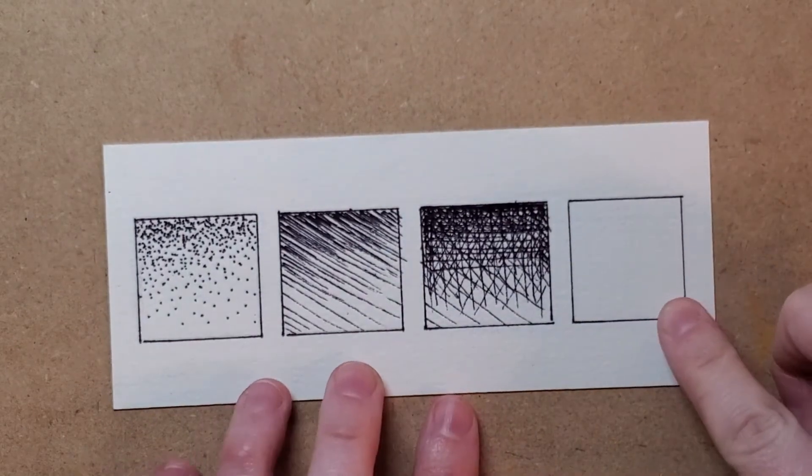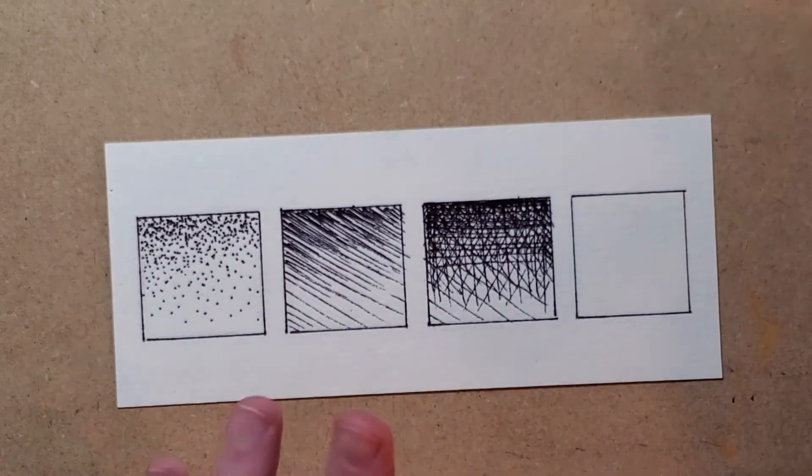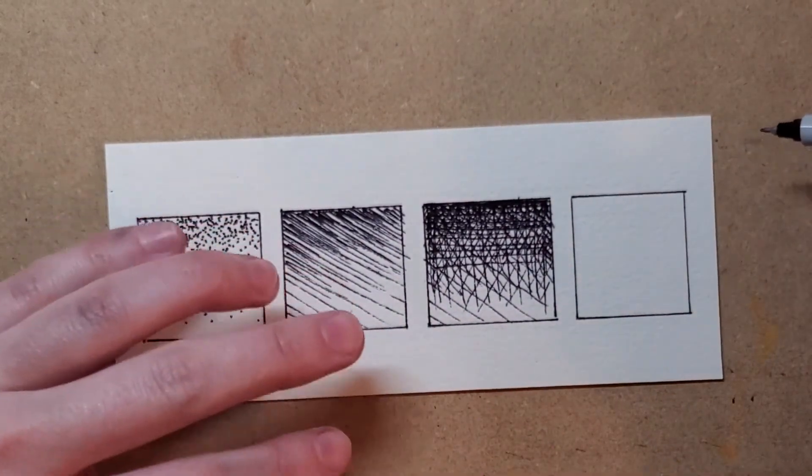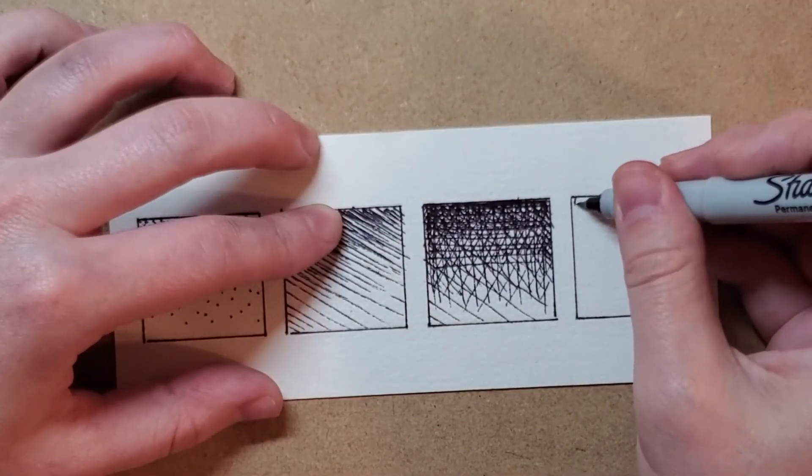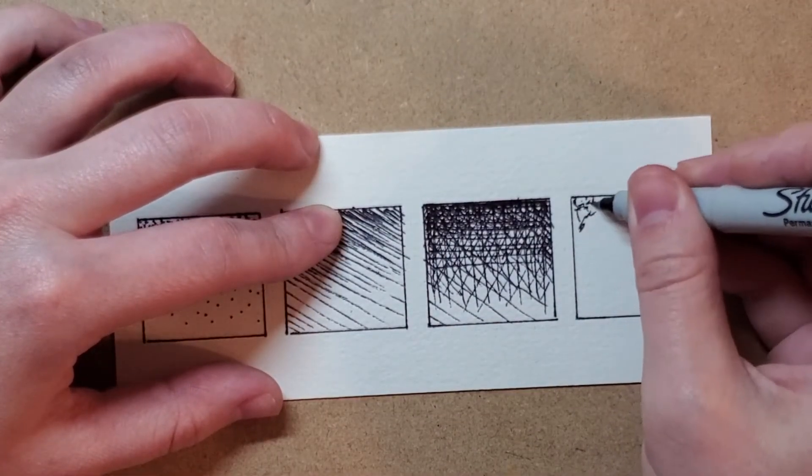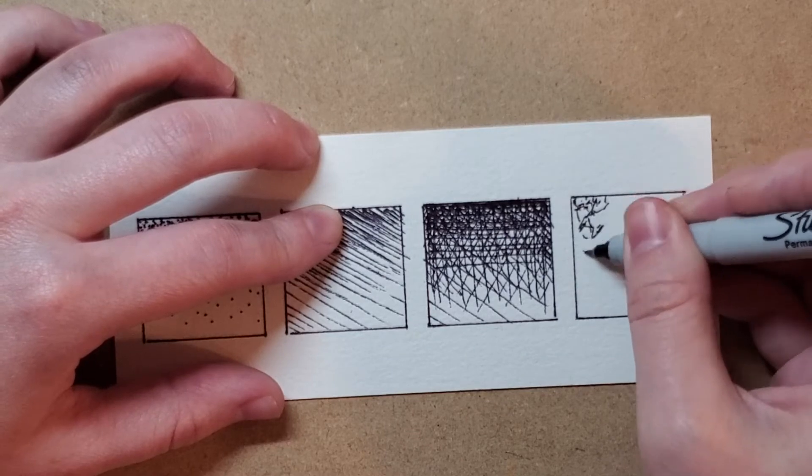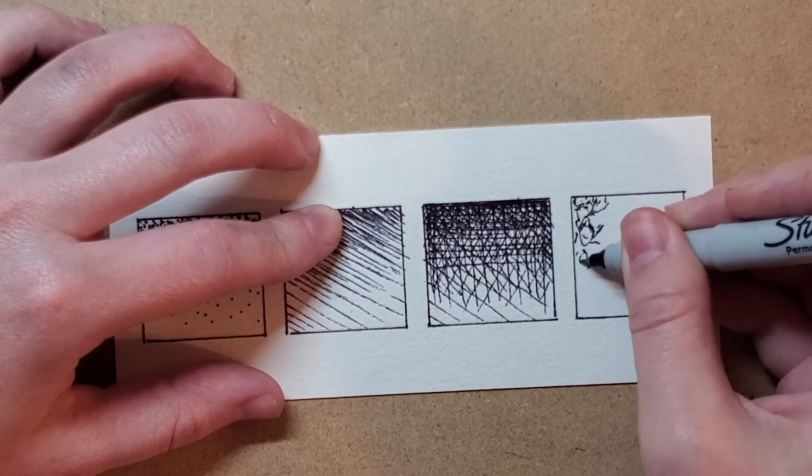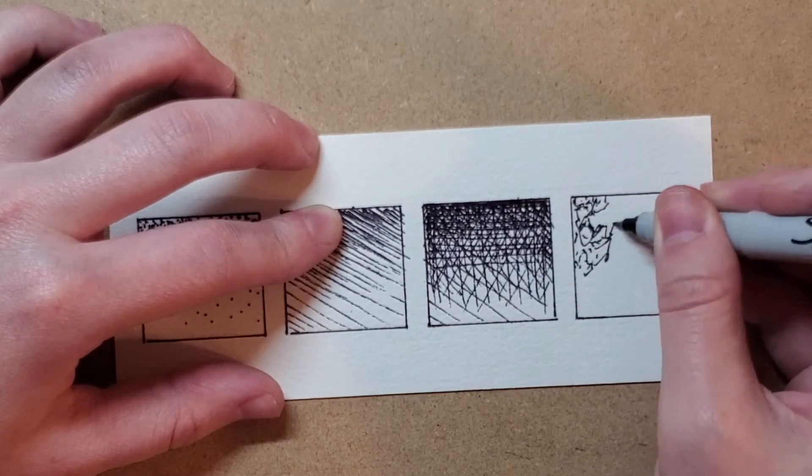So the last way is scumbling or otherwise known as scribbling. Now with this mark making technique, I kind of loosen my marks up a little bit. So people with a shaky hand might have a good go at this.